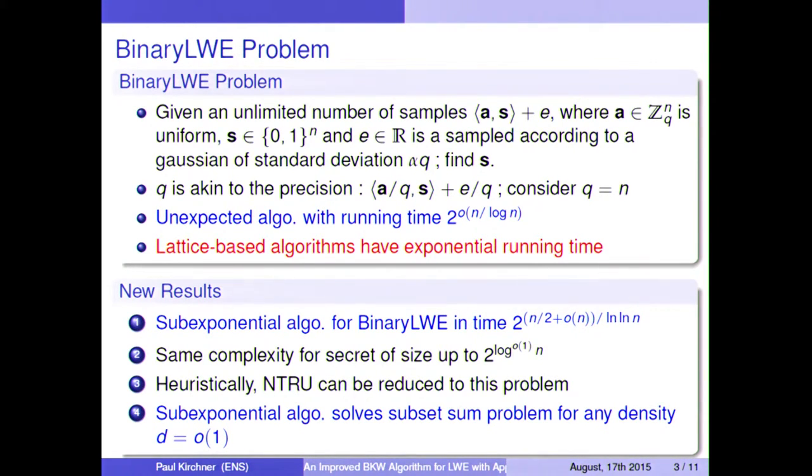So, our results. First, we find a sub-exponential algorithm which runs in time 2^(n/log log n) for most parameters, and we can even have the same complexity for larger secrets. Also, N-TRU can be reduced realistically to this problem and then can be solved with the same running time. And it also works for subset sum. Each time you have a density which converges to zero, then it will be sub-exponential.